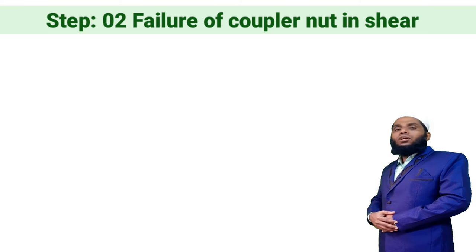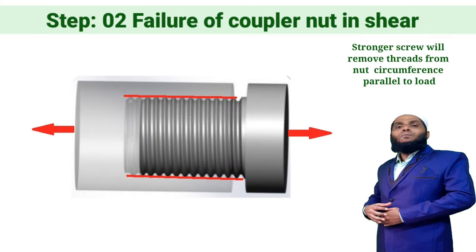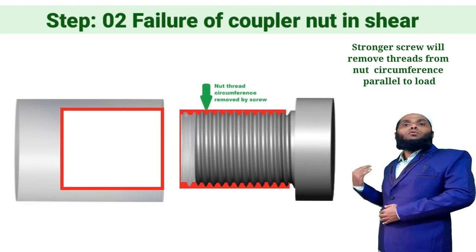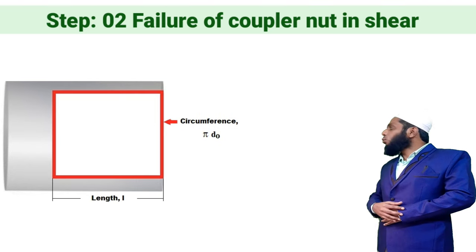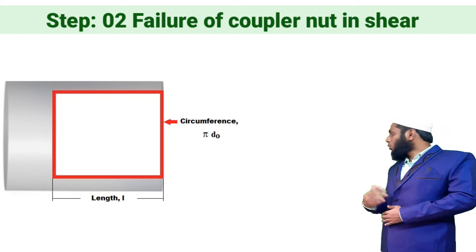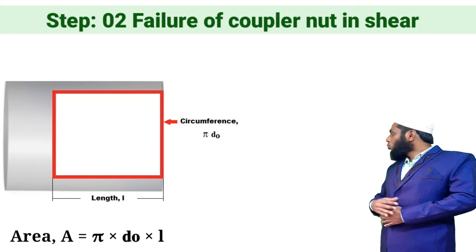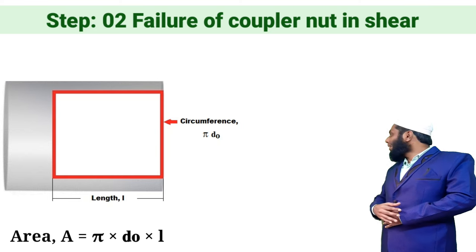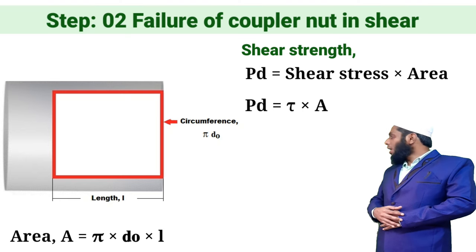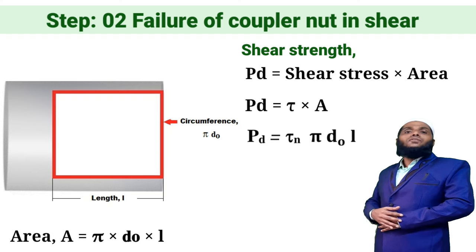Step number two is failure of the coupler nut in shear. Due to tensile load, the stronger screw will shear off the threads from the coupler nut parallel to the applied load, removing the thread circumference of the nut. The area resisting this shear failure is the circumferential area of the nut: A = π × DO × L. Substituting this, the shear strength of the coupler nut is: PD = τ × π × DO × L.